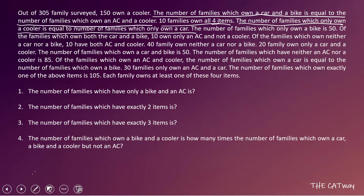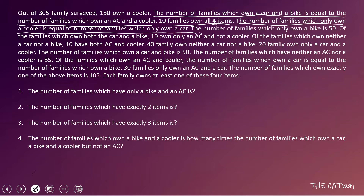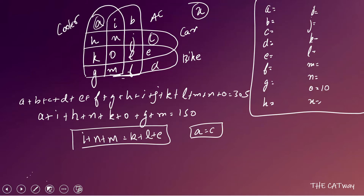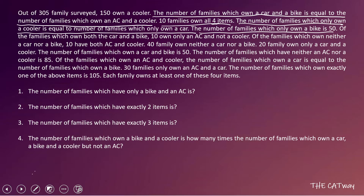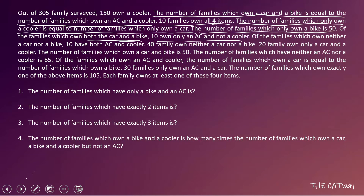The number of families which only own a cooler equals only own a car, so A = C. The number of families which only own a bike is 50, so D = 50. Of the families which own both car and a bike, 10 own only AC and not a cooler — car and bike is E, L, O, K; only AC and not cooler means L — so L = 10.